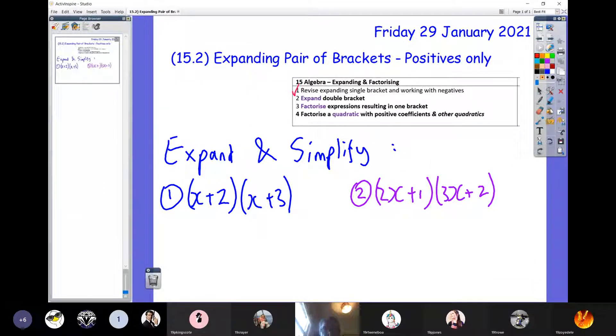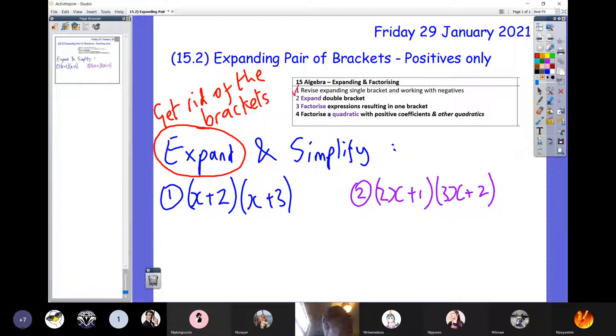What we're doing today is we've got a pair of brackets, two brackets side by side. We've got to do two things: expand them, which means get rid of the brackets, and then secondly, simplify, where you gather like terms. You gather up all your x squareds, all your x's, and all your numbers. Don't worry if you can't remember, I will explain as we go.